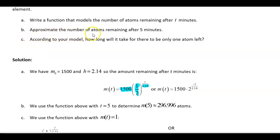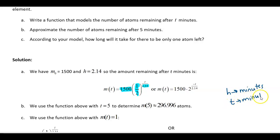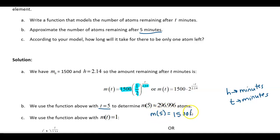Part B: approximate the number of atoms remaining after 5 minutes. Your h is in minutes, so t must also be in minutes — those units need to be the same. They're giving you minutes, so you can just use 5. Plug t = 5 into the function: 1500 times one-half to the power of 5 over 2.14. Punch that into the calculator and you get approximately 296.996 atoms.